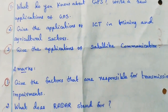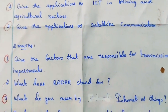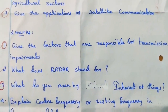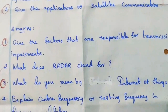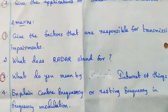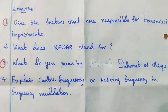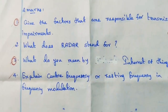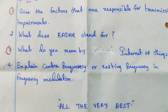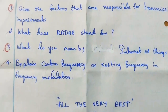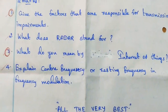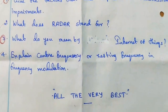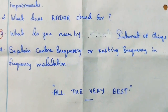2-mark questions: 1st — give the factors responsible for transmission impairments. 2nd — what does RADAR stand for? 3rd — what do you mean by Internet of Things? 4th — explain center frequency or resting frequency in frequency modulation. Questions 1 and 3 are very important. All the very best!